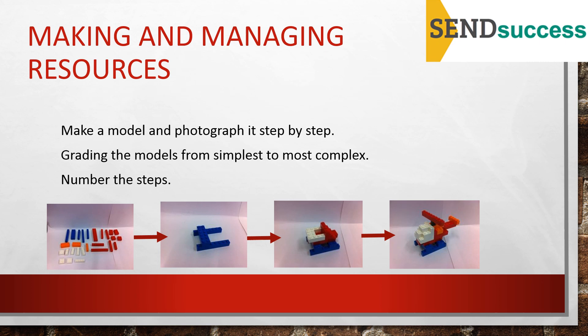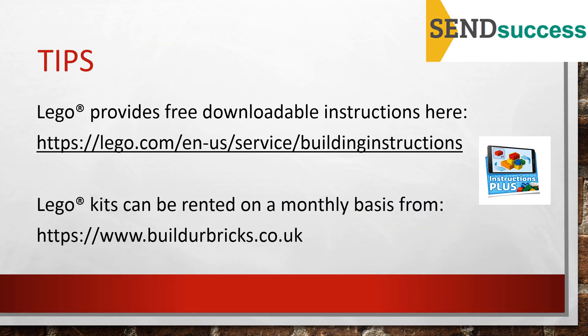To get started with your Lego group you can use a ready-made Lego kit, which always comes with pictorial instructions. If you want to use your own Lego from a random assortment, you can create any model — it doesn't have to be recognisable, it can be abstract, starting with a very simple tower through to much more complex builds. Just make sure you photograph each step and number them. If you have a Lego kit whose instructions you've lost, you can visit the Lego website using the link shown and download the instructions. There's also an app called Instructions Plus that shows instructions digitally on an iPad. Lego kits can now be rented on a monthly basis, so you can move on to a new kit the following month.